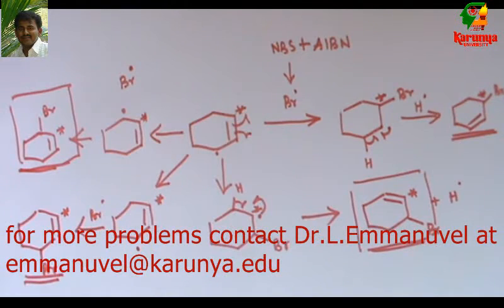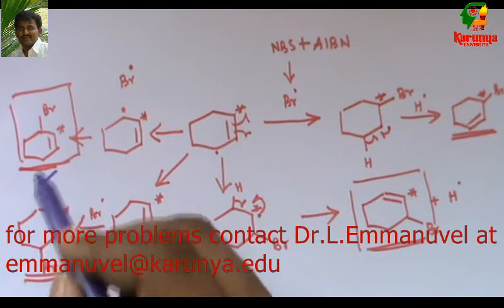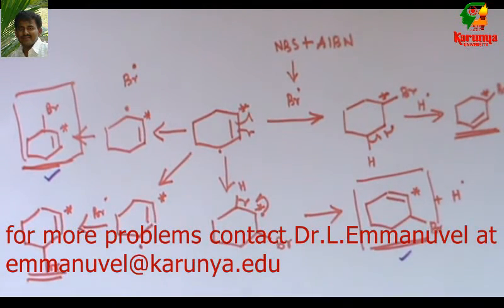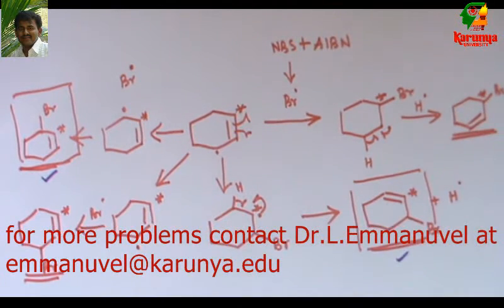Now from the four reaction pathways, we get four products in that two are the same. This and this they are same. Apart from that we got two more and they are entirely different.